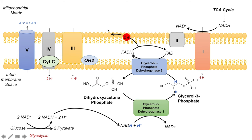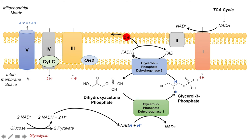Ubiquinone becomes ubiquinol, which then travels to complex 3, where complex 3 pumps out 4 protons into the intermembrane space. Then cytochrome C travels to complex 4, where complex 4 pumps out 2 protons into the intermembrane space. Once we have enough hydrogen ions in the intermembrane space, they get pumped back into the mitochondrial matrix. Every 4 hydrogen ions produces 1 ATP. So with TCA cycle NADH, we have 4 from complex 1, plus 4 from complex 3, plus 2 from complex 4, giving a total of 10 hydrogen ions. So 10 divided by 4 equals 2.5 ATP.